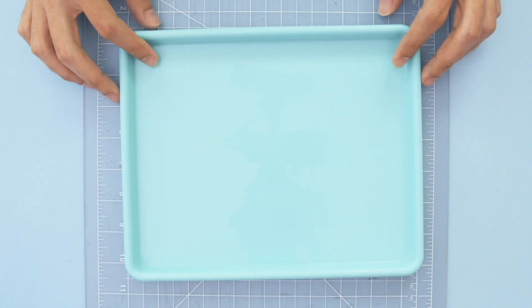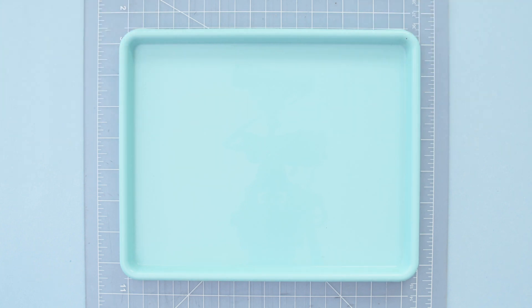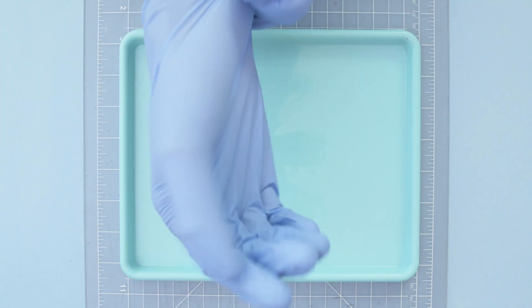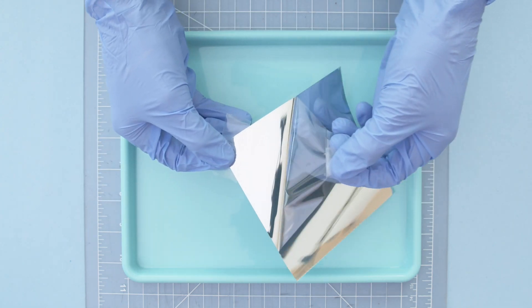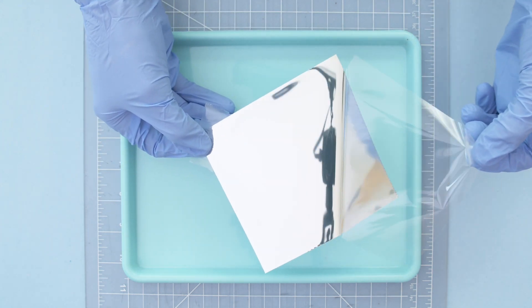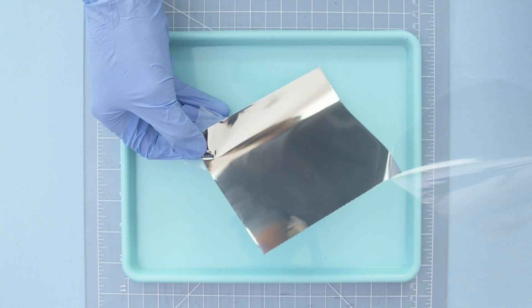I'm using this serving tray so that the soapy water doesn't get all over my work surface. Also using a pair of gloves so we can avoid smudges and fingerprints. The film has a protective backing that needs to be removed. Adding pieces of tape to the corners can help peel apart the two layers.